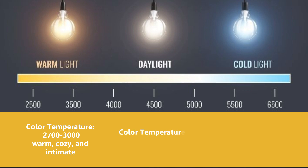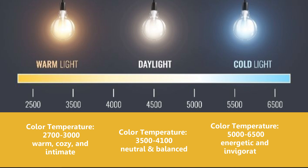The color temperature of cool white light varies from 3500 to 4100 Kelvin. Its appearance is neutral white and offers a more neutral backdrop. Color temperature of daylight varies from 5000 to 6500 Kelvin. Its appearance is bluish white. It is energetic and invigorating, and can help improve focus and productivity.